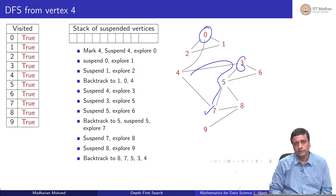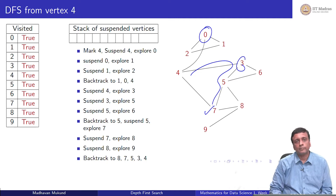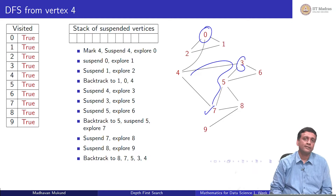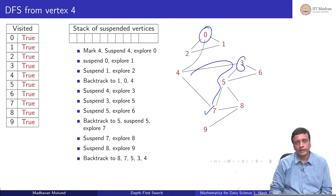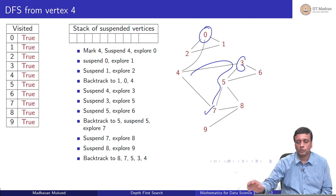This was how depth first search works. In a way, you can imagine DFS like how you browse the internet: you start reading something interesting, click on a link, follow that, and before you know it you are somewhere far away. Then you have to go back, follow the links back to where you started, and continue. So DFS finds the first interesting vertex and goes there, keeps that in suspension, finds the next interesting vertex, goes there, and so on.